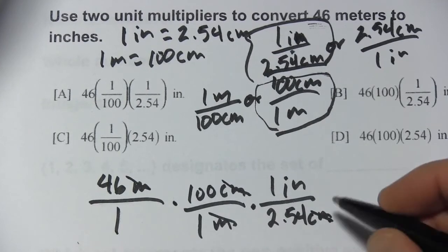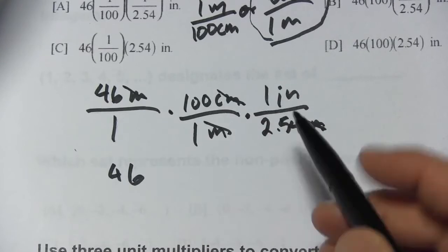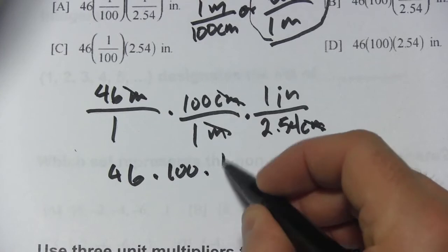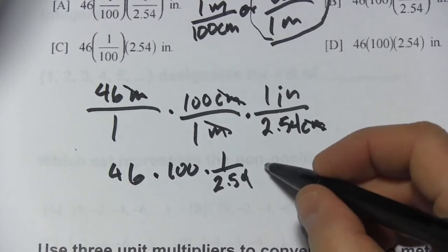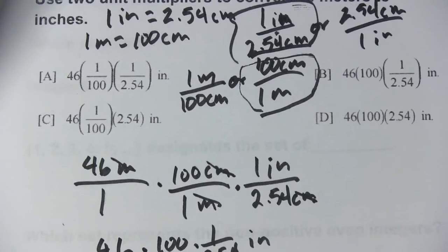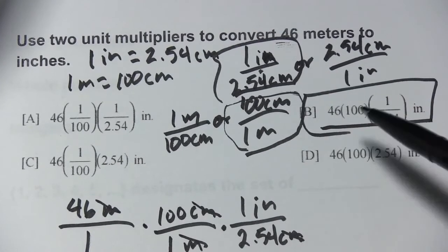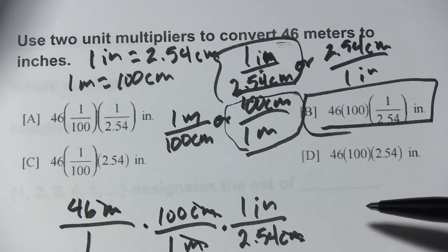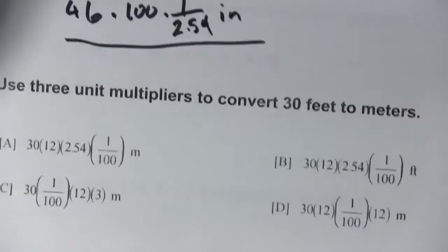If I simplify this: 46 over 1 is just 46, 100 over 1 is just 100, and then 1 over 2.54 stays as 1 over 2.54, and we end up in inches. That looks like choice B. Really what you're doing is using this method to keep track of whether in each step you multiply or divide — that's what this is really about.